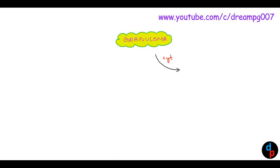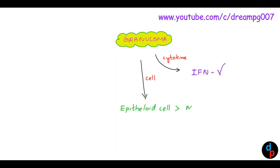The important cytokine that helps in granuloma formation is interferon gamma. The most important cell in the granuloma is epithelioid cells, which are formed from the macrophages. The T cell present in the granuloma is CD4 Th1 cells.